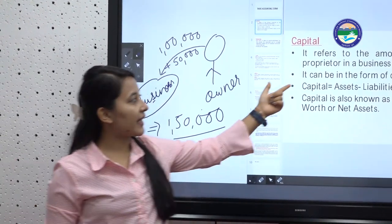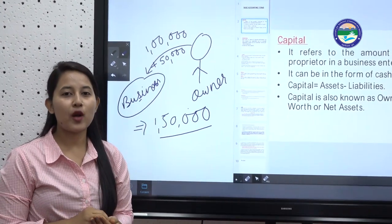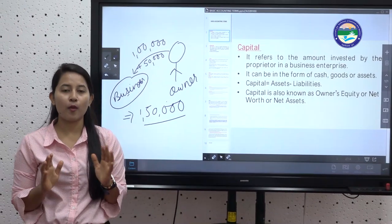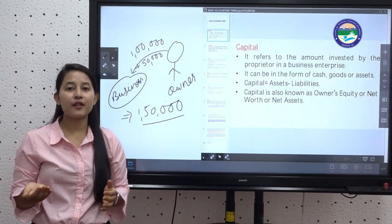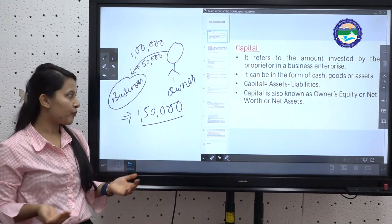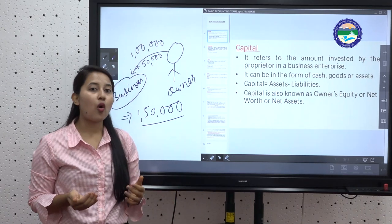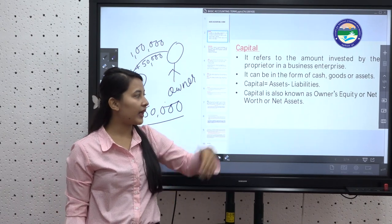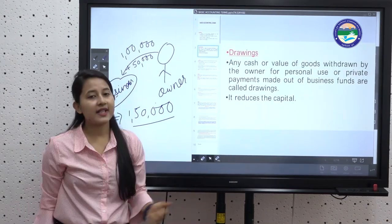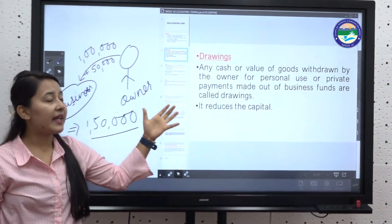This makes clear that capital is not necessarily in the form of cash — it can be in the form of cash, goods, or assets. Capital is also known as owner's equity, net worth, or net assets.